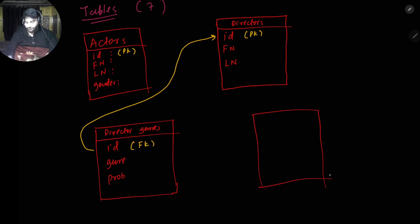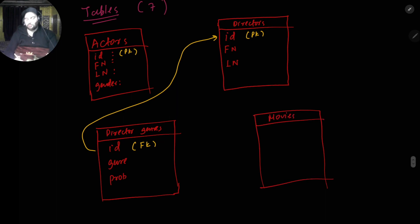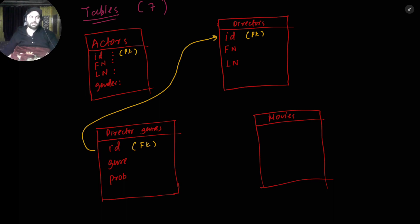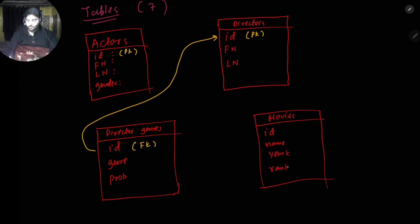I hope the concept of foreign key is clear. Then we have a table of movies. In movies we have id — each movie has a unique id — then a name, then year of release, then rank_score. Rank score means how much people rated it; in IMDB the rank is out of 10. For example, The Shawshank Redemption has a ranking of about 9.1. Here the id is the primary key.